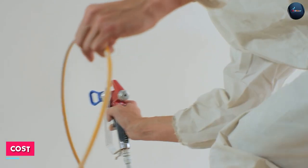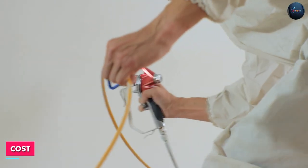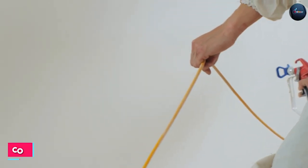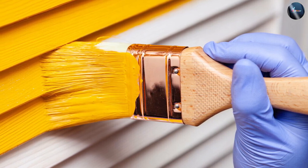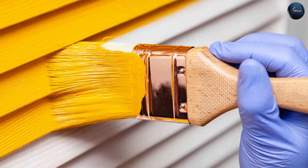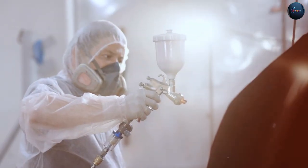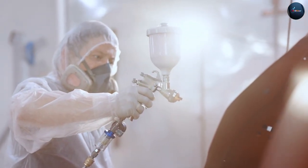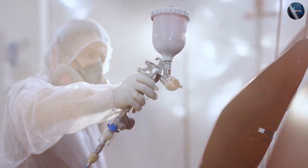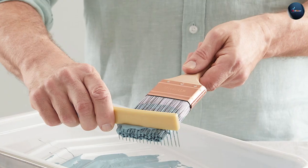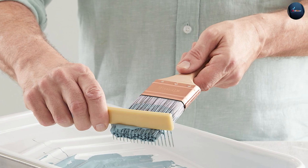When considering the cost, it's important to note that airbrushing can be initially more expensive. Airbrush kits typically include the airbrush itself, an air compressor, and additional accessories. The quality and features of the airbrush and compressor can significantly affect the price. On the other hand, paintbrushes are generally more affordable, with a wide range of options available at different price points.